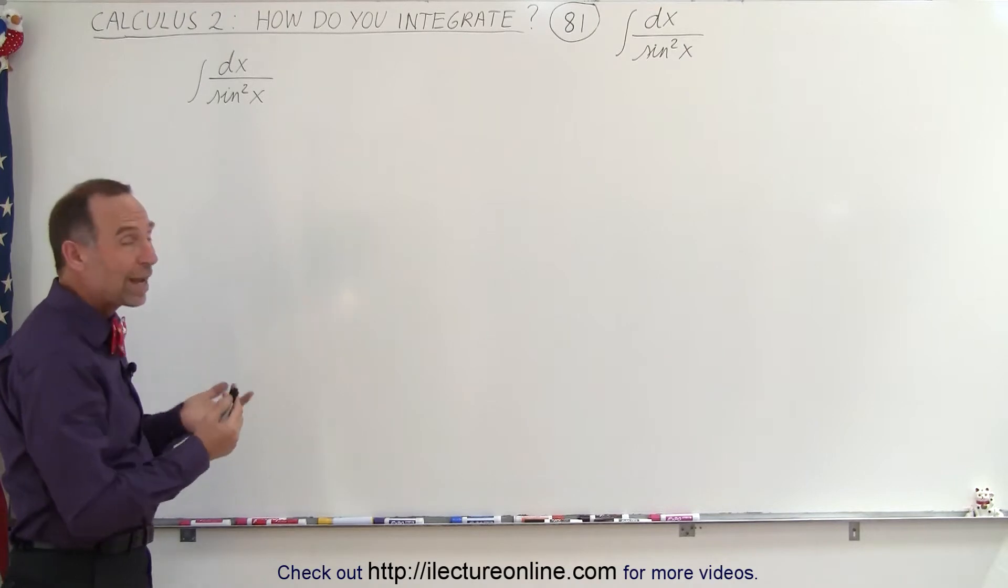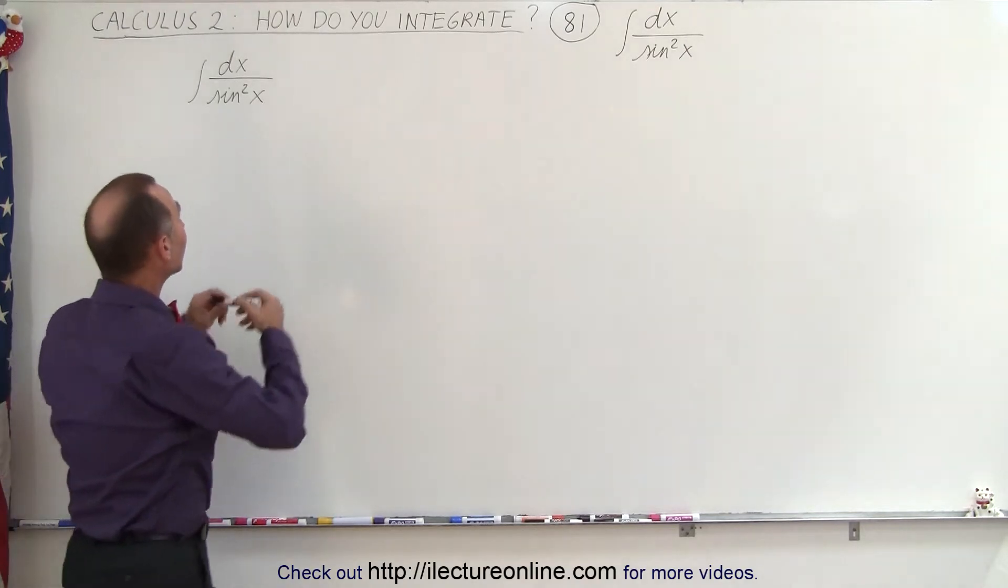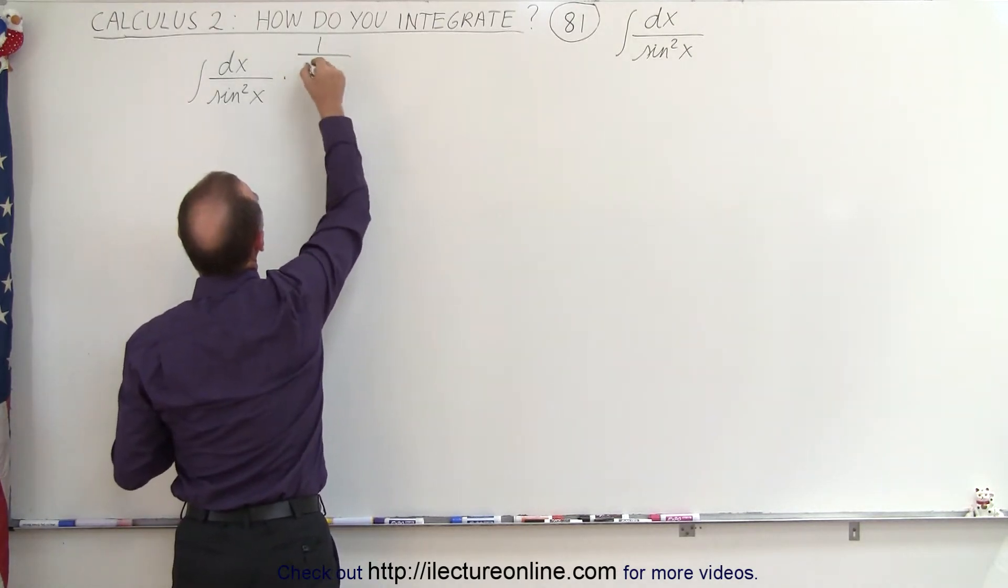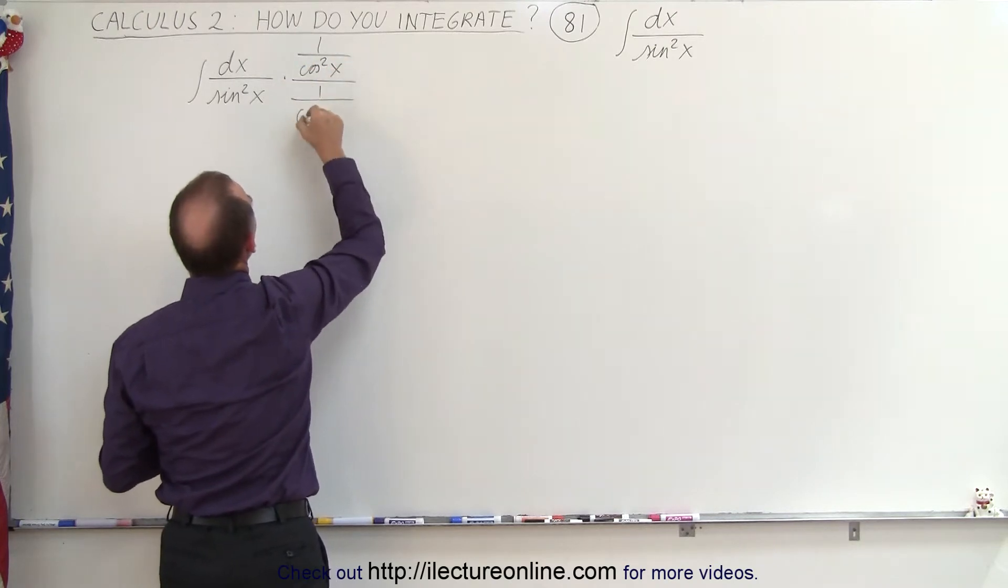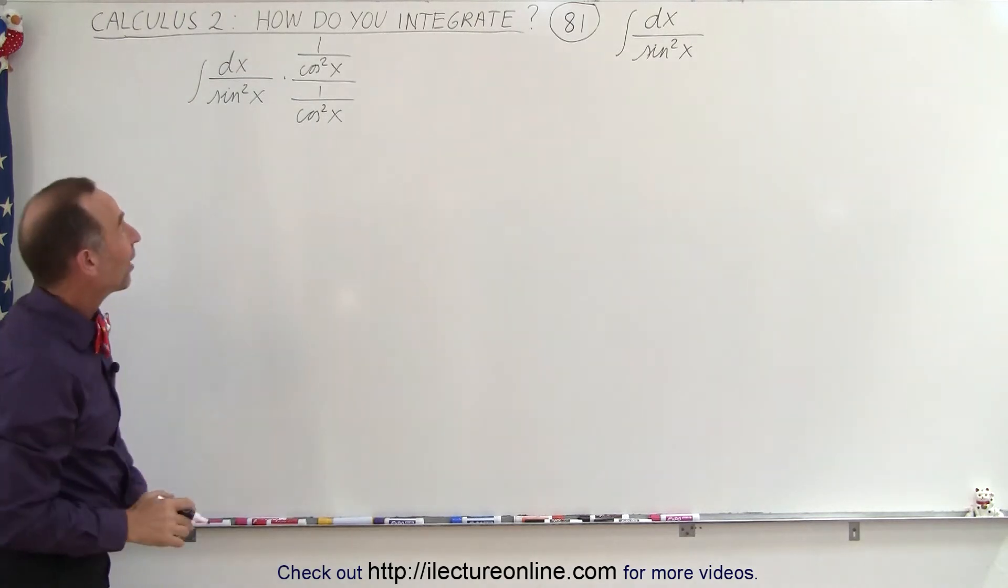It turns out the way to integrate this is to multiply both the numerator and the denominator by 1 over the cosine squared of x divided by 1 over the cosine squared of x. Who would have thought?